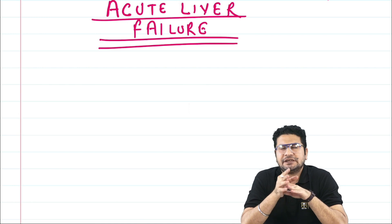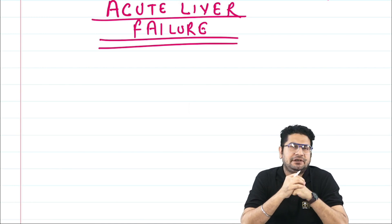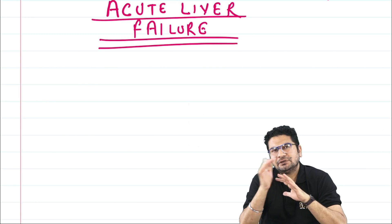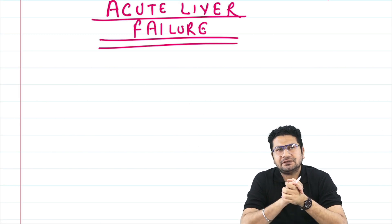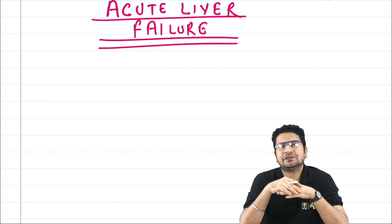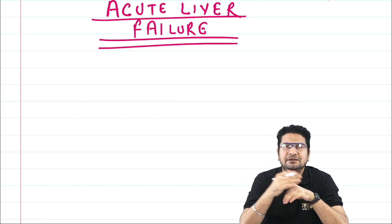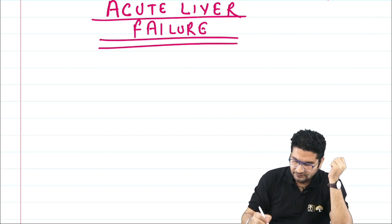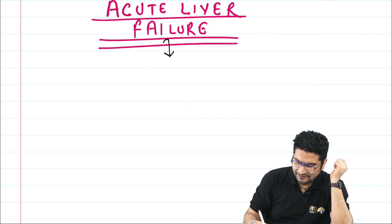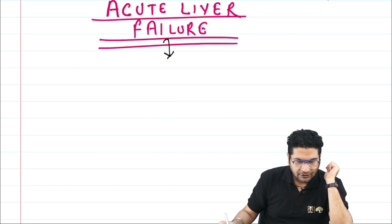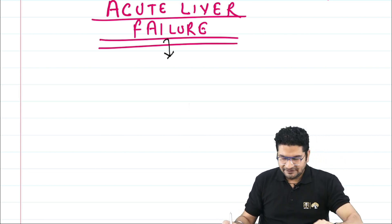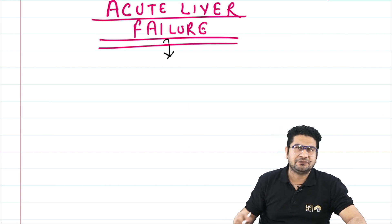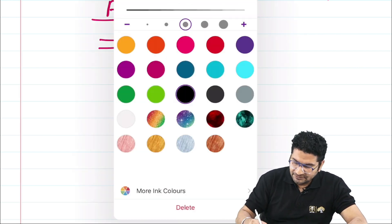The next topic is acute liver failure. A patient who was absolutely fine develops symptoms within a few days, including coagulopathy and CNS manifestations. These are signs of acute liver failure, which involves liver damage that can be caused by certain drugs, viruses, or toxins.